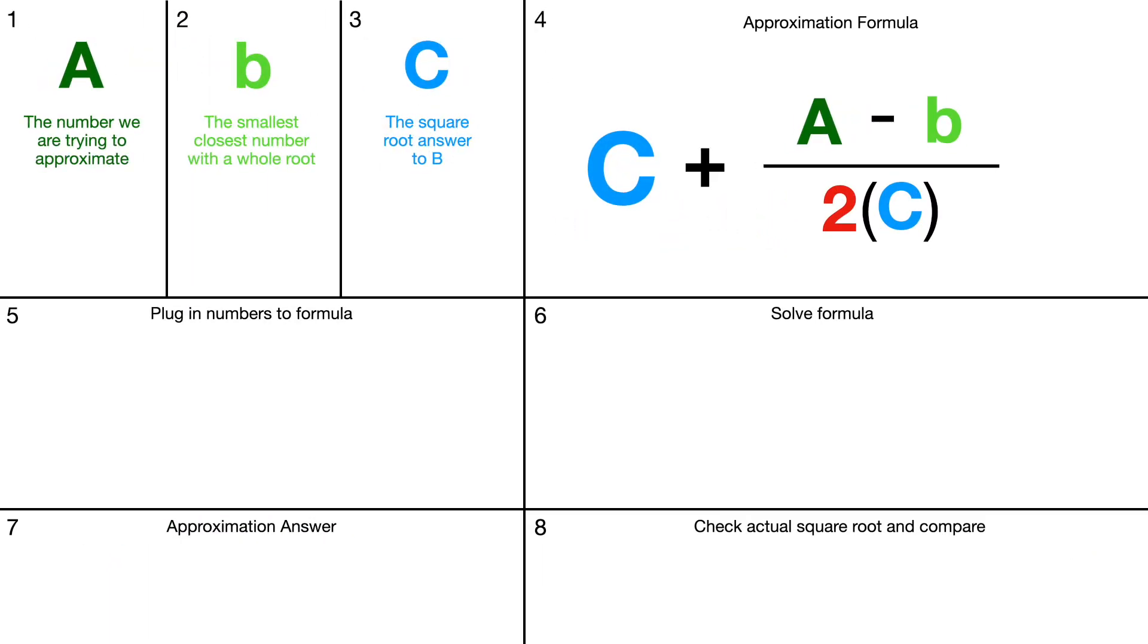A, the number we're approximating the square root of, is 27. B, the closest number we found, is 25. The square root of 25 is 5. Now we plug into our approximation formula: C, which is 5, plus on top A minus B, which is 27 minus 25, divided by 2 times C, which is 5.